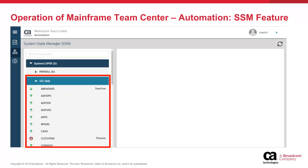The arrow to the left of a resource name indicates the state of the resource. A green up arrow indicates that a resource desired to be up is up — desired state and current state are both up. A green down arrow indicates that a resource desired to be down is down — desired state and current state are both down. An up arrow in a red circle indicates that a resource desired to be down is up. A down arrow in a red circle indicates just the opposite — desired state is up and current state is down. Here, all the shown resources are in their desired state except for resource CCITCPGW, which is desired to be up but is down.